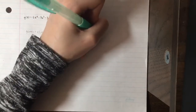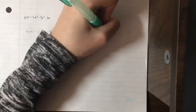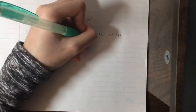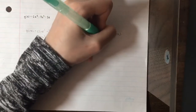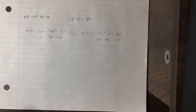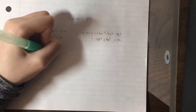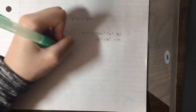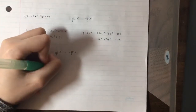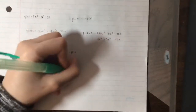Then negative g(x) is the entire equation multiplied by negative 1, flipping every sign, giving negative 6x⁵ plus 7x³ plus 3x. Since g(negative x) equals negative g(x), this function is odd.